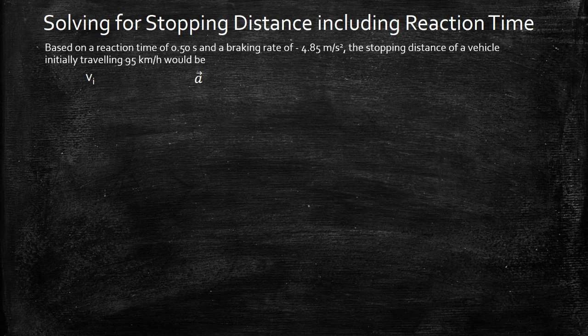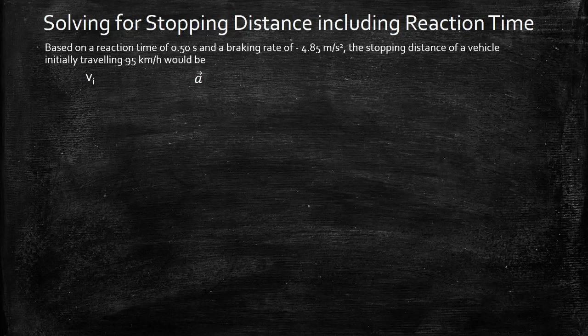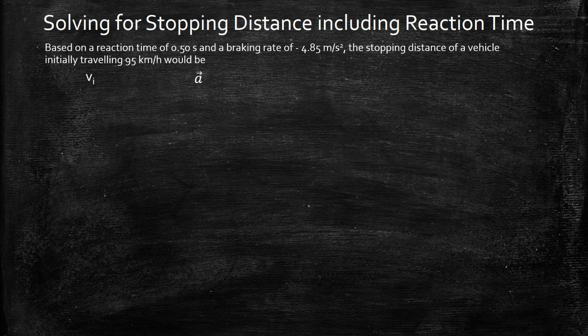For this problem they give us a reaction time of 0.50 seconds and then a braking rate of negative 4.85 meters per second squared. Now we need to use this information to calculate the stopping distance of a vehicle initially traveling 95 kilometers per hour.